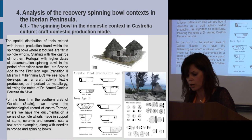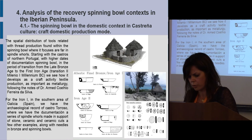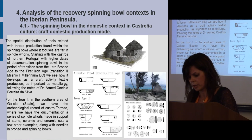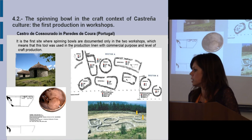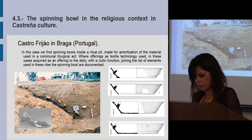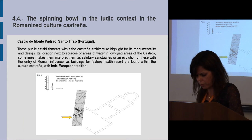Analysis of the recovery contexts of the spinning ball in the Iberian Peninsula covers: the spinning ball in the domestic context and craft domestic production mode, characteristic of the Castrenia habitat model; the study of the house as an element of the technological chain in which the spinning ball is inserted, and the study of housing as a temporary workshop production. The spinning ball is also studied in the craft context of production in Castrenia workshops, in the religious context, and in the Roman period.